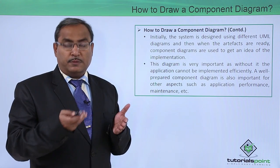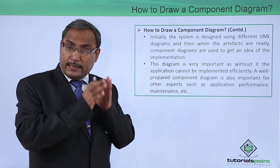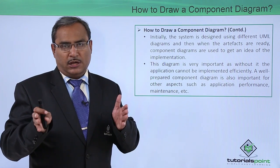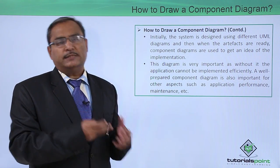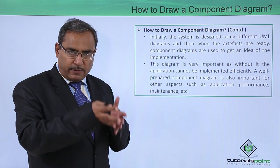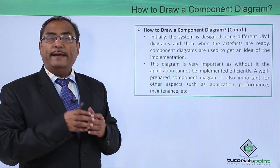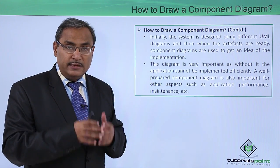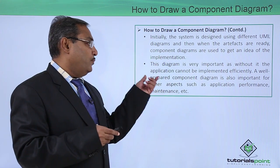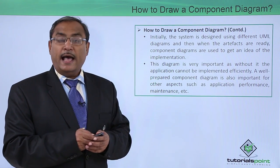For example, at first we go for object diagrams, prior to that we go for class diagrams. After getting all these classes, we decide which package will contain which set of classes. There is another package containing another set of classes. So now these two packages will become two components in our component diagram. We should go through the first few diagrams of the application development process, and when all these artifacts are ready, then this component diagram will be used to get an idea of the implementation. This diagram is very important as without it, the application cannot be implemented efficiently.